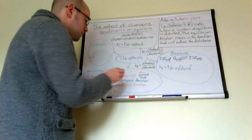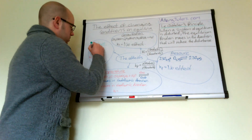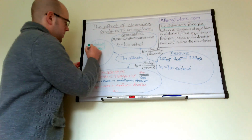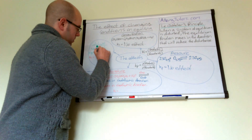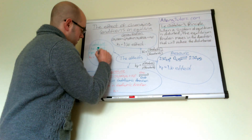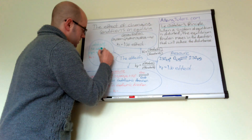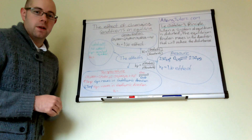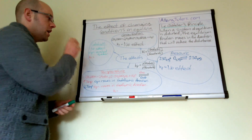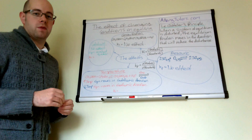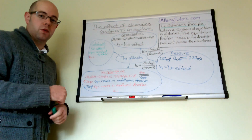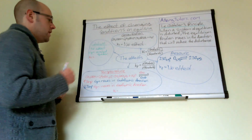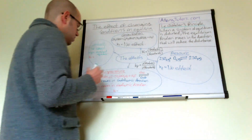The final factor is a catalyst. A catalyst does not actually affect the equilibrium position whatsoever — it has no effect. All it does is allow equilibrium to be established more quickly. This is useful in industry because you reach the equilibrium stage much faster, but it has no effect on the amount of products. A catalyst speeds up both the forward and reverse reactions equally, so the value of Kc is not changed.